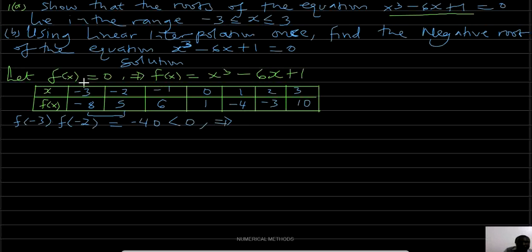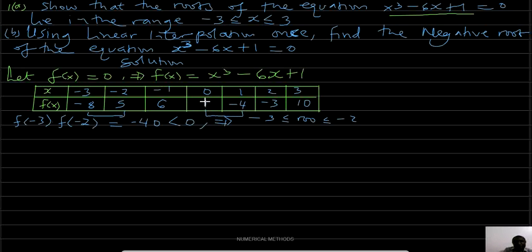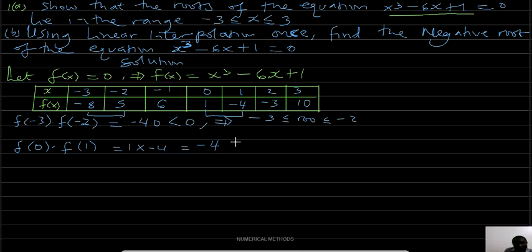We also see a sign change between 0 and 1: f(0) × f(1) = 1 × (-4) = -4, which is less than 0, meaning there is a root between 0 and 1.